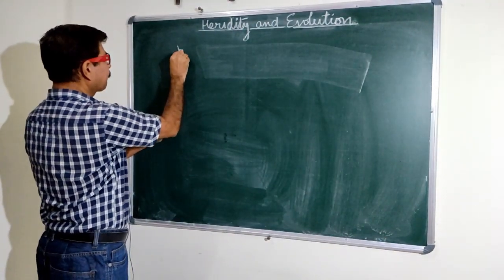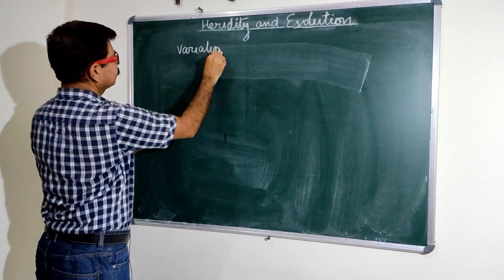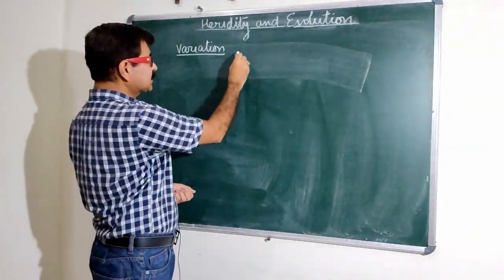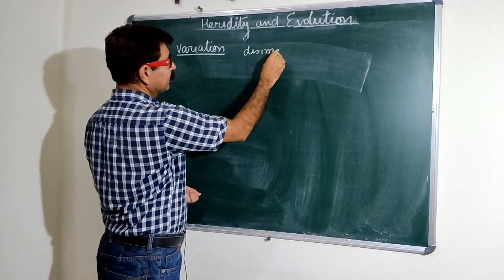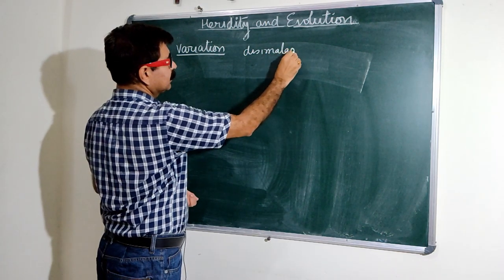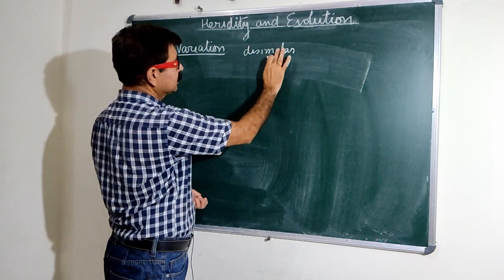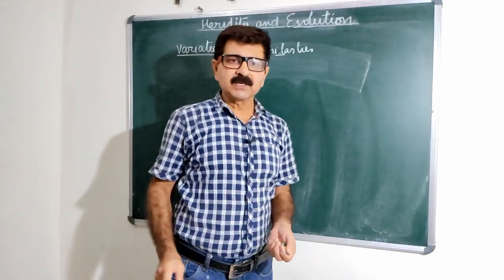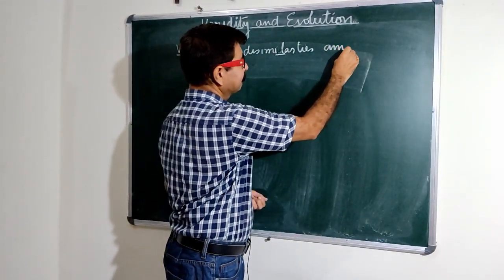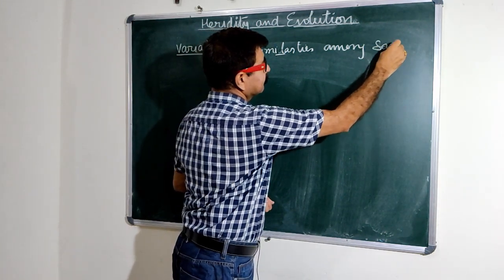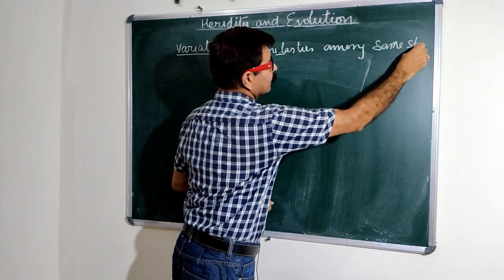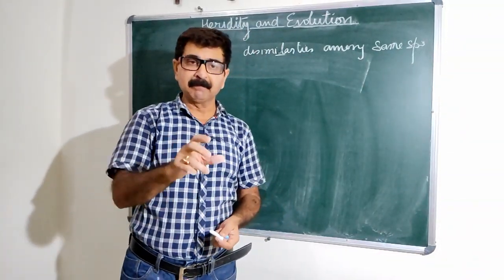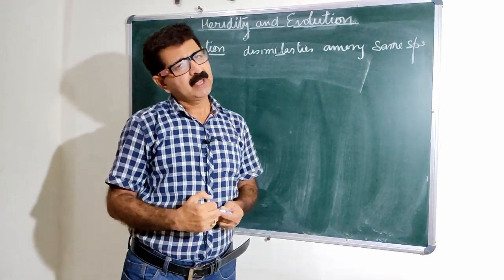Now, what are these variations and how do they produce? Variations are the dissimilarities among members of the same species. Within the members of a particular species, the dissimilarities found among them are called variations.